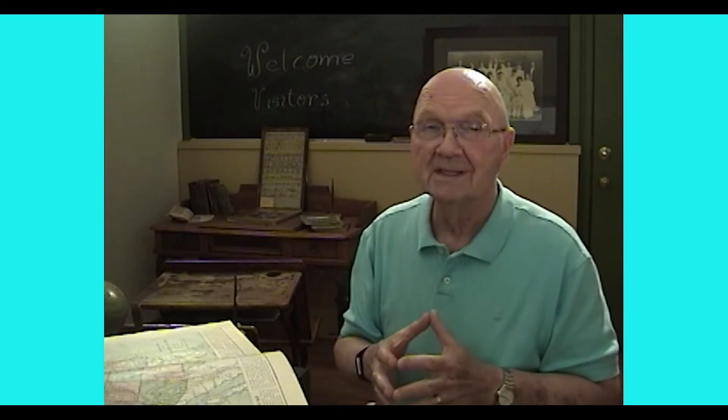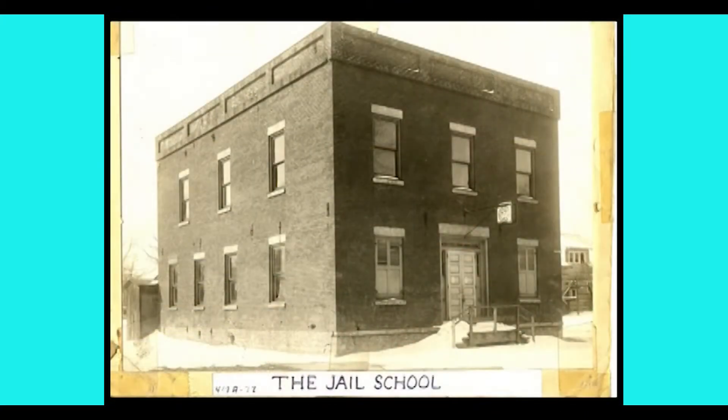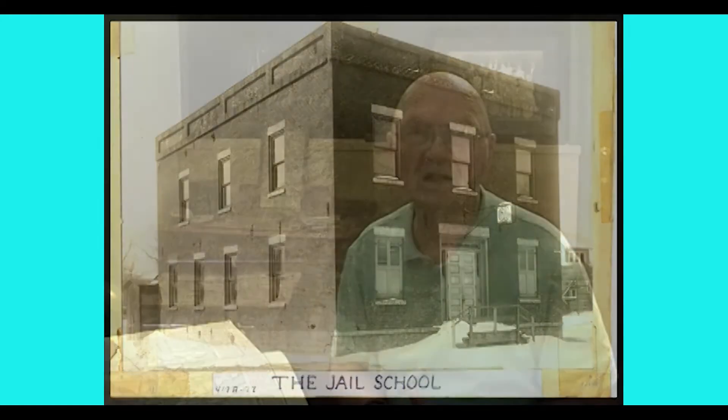Now, there was another school in St. Clair, an early school, that was officially the Trumbull Street School. Well, the secret behind that particular school was that everybody called it the jail school because originally it was a St. Clair jail. And then when they didn't need it as a jail anymore, they converted it into a school.